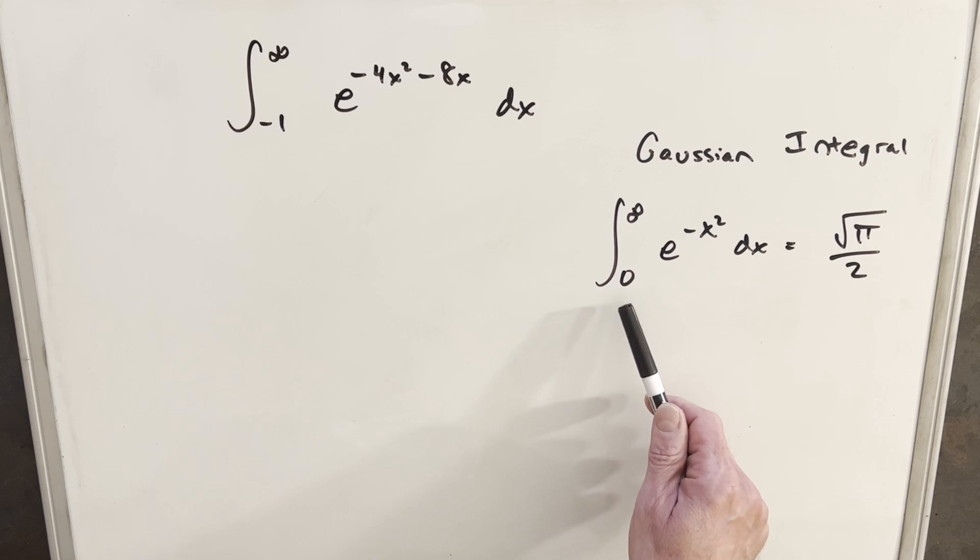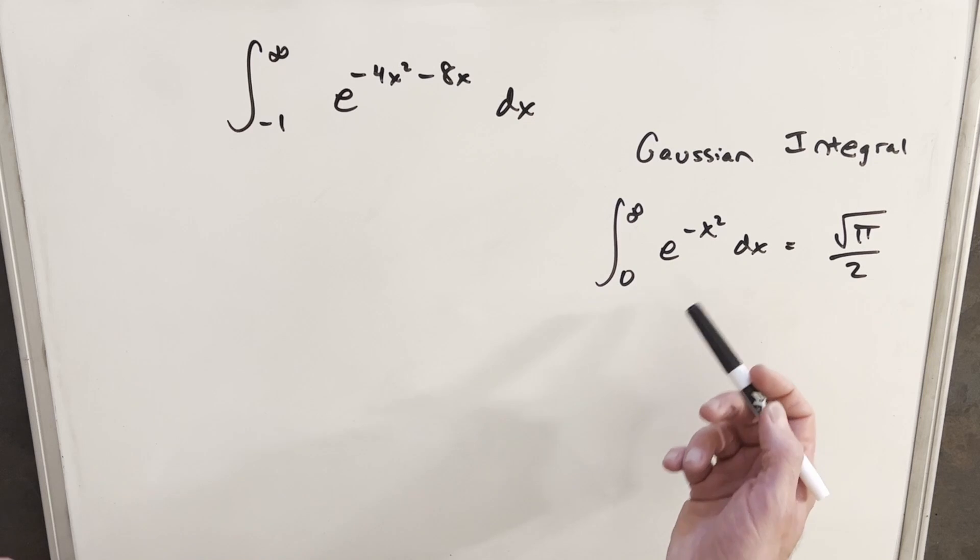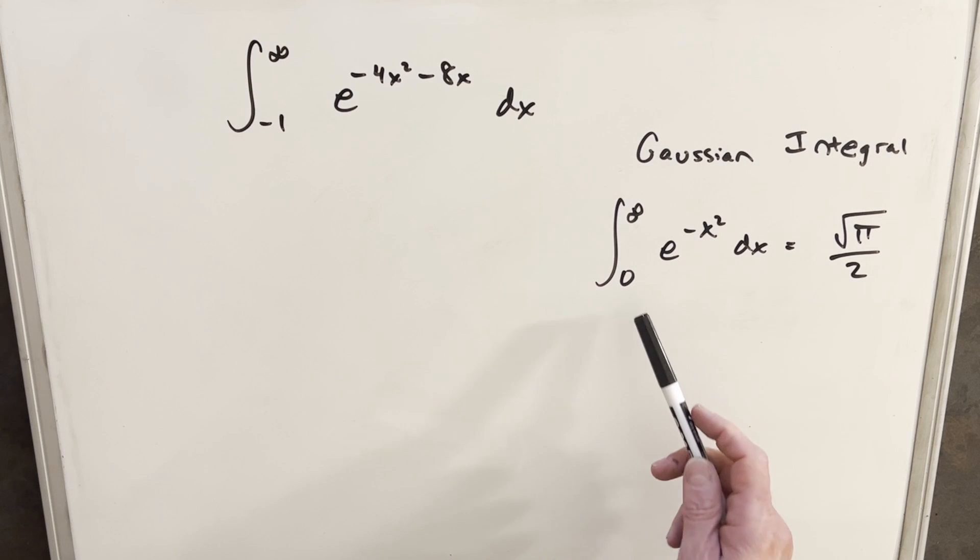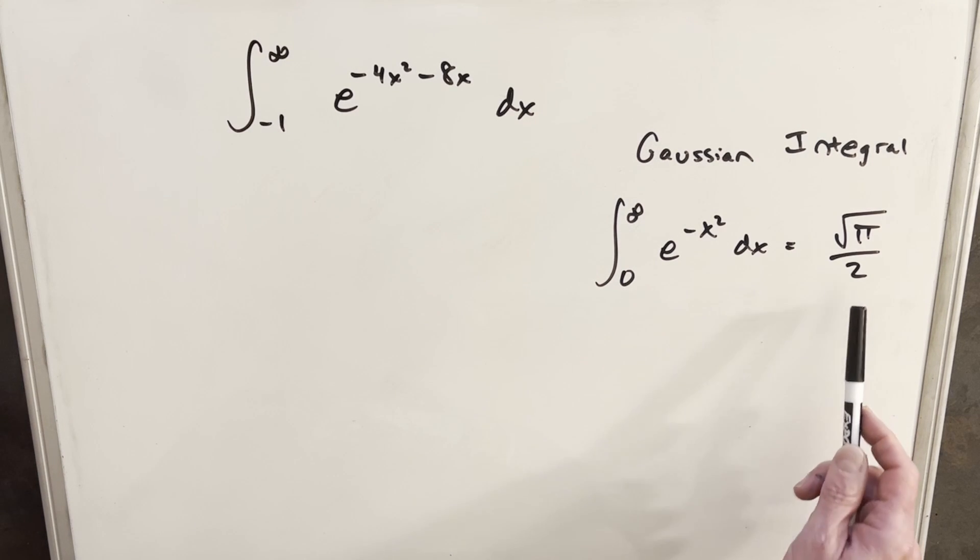So the other formula for minus infinity to infinity is going to be square root of pi. The nice thing with this, it comes up a lot in contest problems like MIT integration bee, and you don't need to prove this in those contests. Usually, if you can get it into this form, you can just use the value.